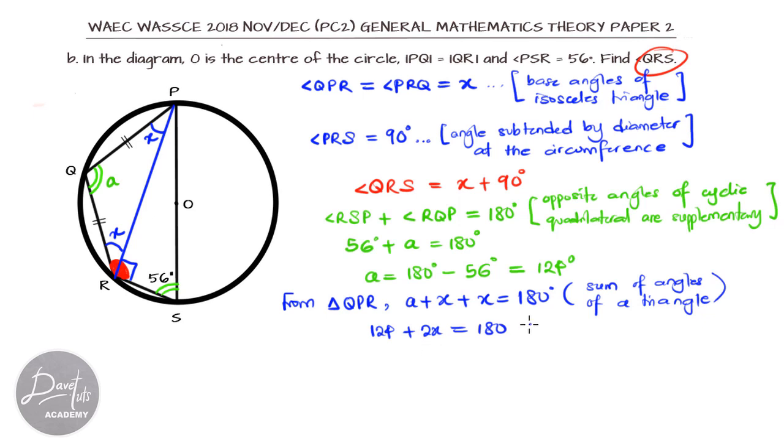Our A is 124 plus 2X equals 180 degrees. Therefore, our 2X will be 180 minus 124, and that is 56 degrees, such that X is 56 divided by 2, and that will be 28 degrees.